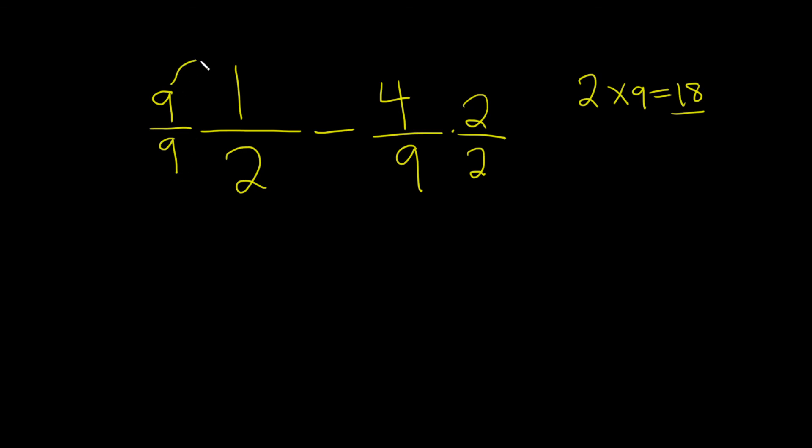Okay, so multiplying across, nine times one is nine, over, and then nine times two is eighteen, minus two times four is going to be eight, two times nine is eighteen.